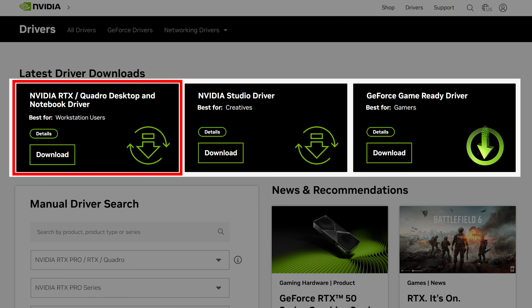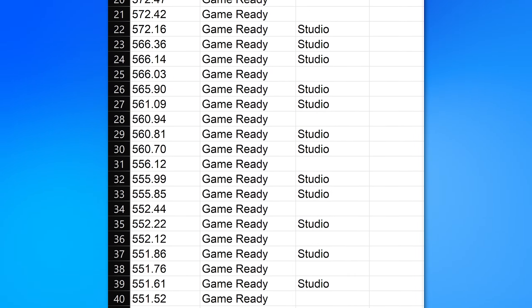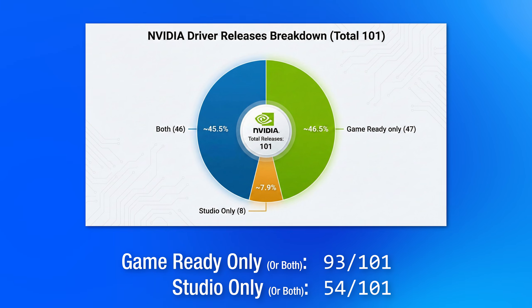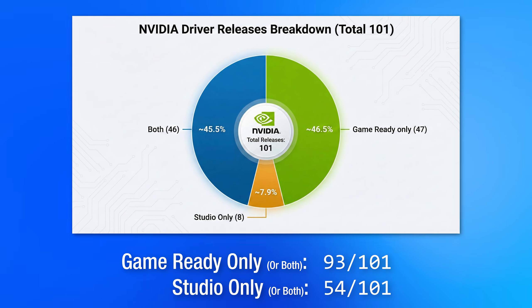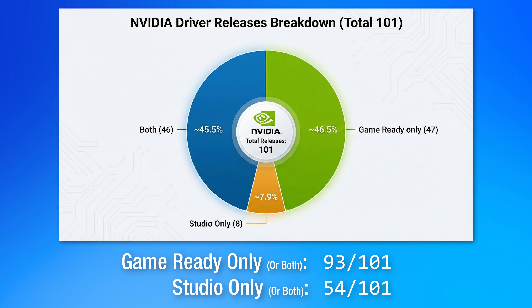You can't actually install the Quadro drivers with normal gaming cards. However, they may still share the version number with the other branches, so we can compare those. Anytime NVIDIA releases a new driver version number, there's always going to be the GameReady driver, and then sometimes the Studio driver or Quadro driver along with it, still with the same version number. I fetched a list of all driver releases going back a while, and it turns out that 54 of the last 101 release versions had Studio drivers, and the rest only had GameReady drivers — so around every other driver release.